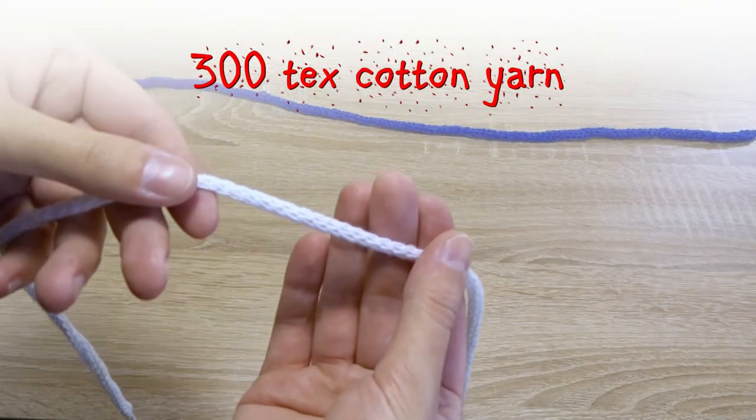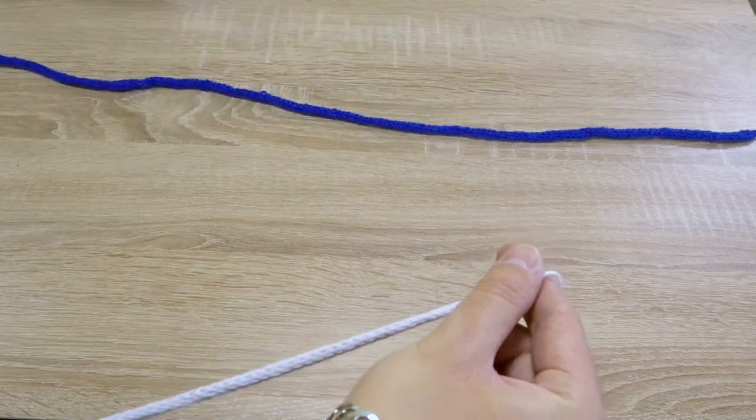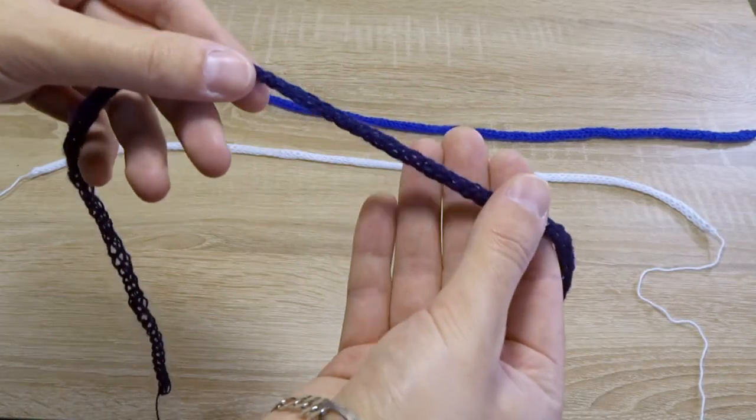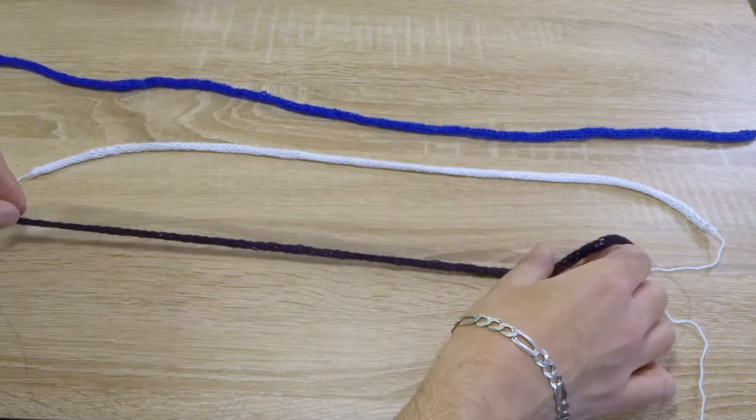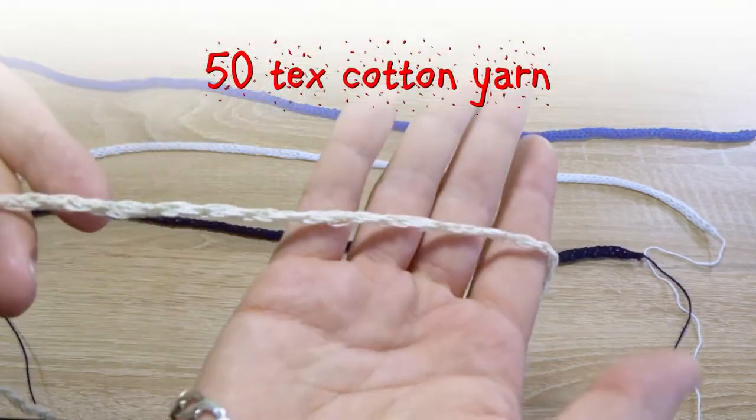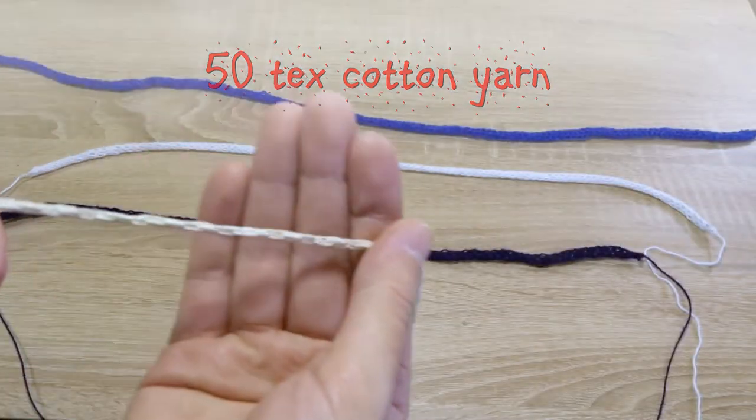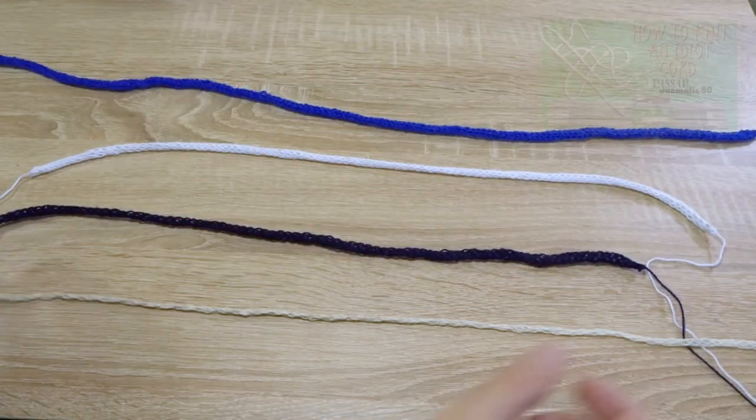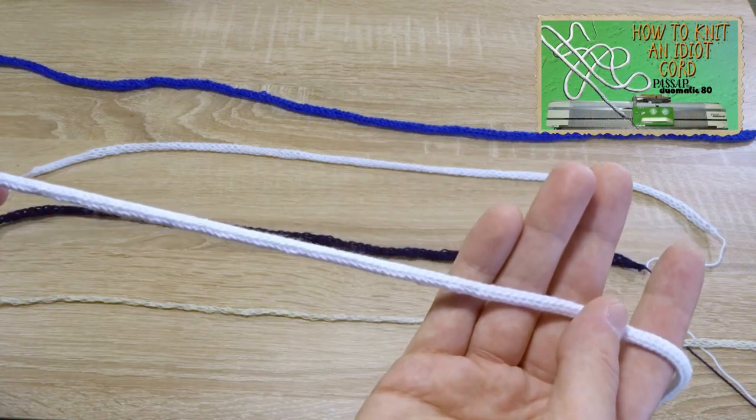You can see a few test pieces using different yarn thicknesses. And this is the i-cord that I made on my knitting machine. It's a much tighter knit.